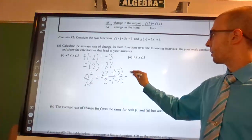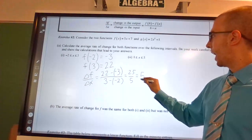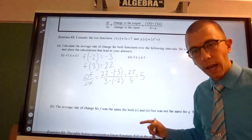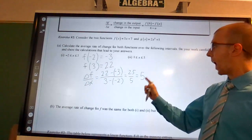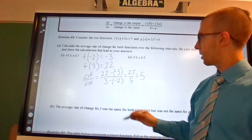So that comes out to be 25 over 5, which gives an average rate of change for our f function of 5 over that interval.